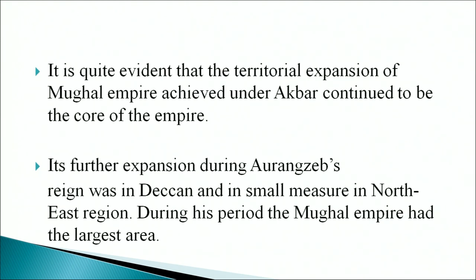In conclusion, it is quite evident that the territorial expansion of the Mughal Empire achieved under Akbar continued to be the core of the empire. Its further expansion during Aurangzeb's reign was in the Deccan and in small measure in the northeast region. During this period the Mughal Empire had its largest area. However, the beginning of the decline of the Mughal Empire could also be traced to the rule of Aurangzeb. The breaking up of the association with potent regional forces like the Rajputs, and the failing relationship with the Deccan states and Marathas, shook the unity and stability of the Mughal Empire. Under his successors the empire kept disintegrating.